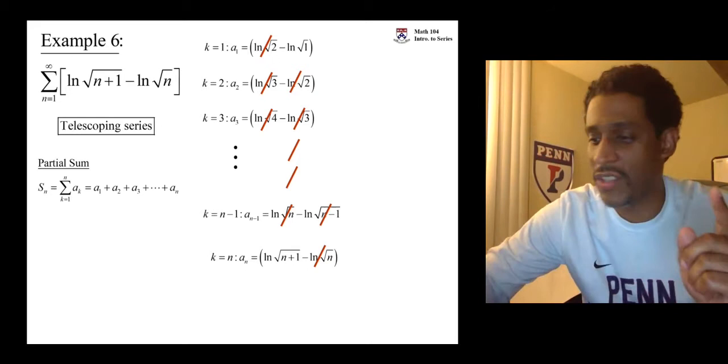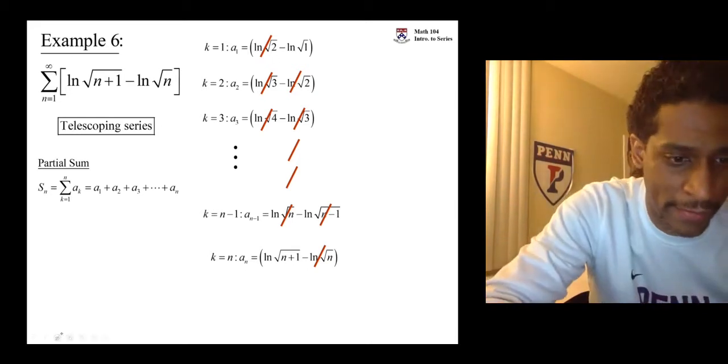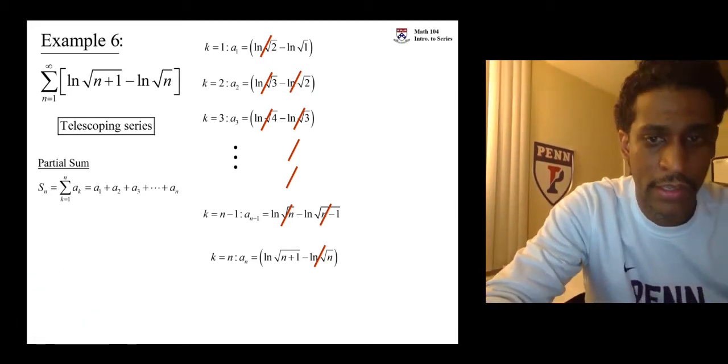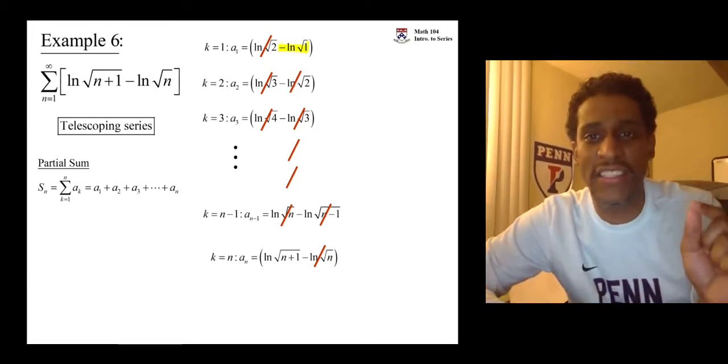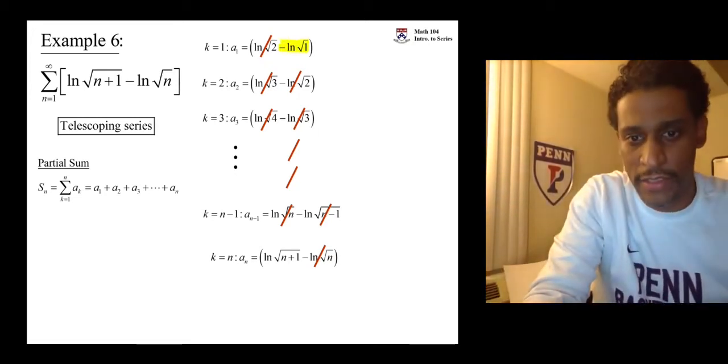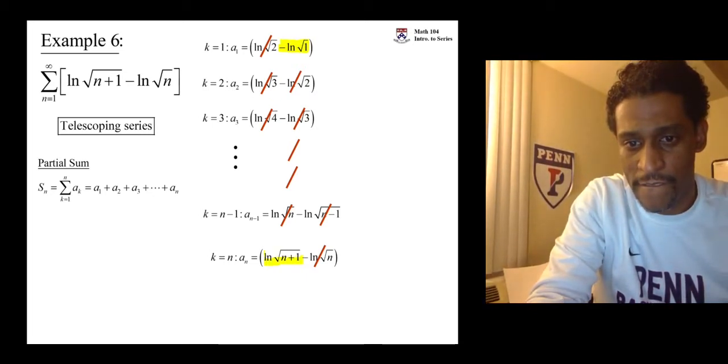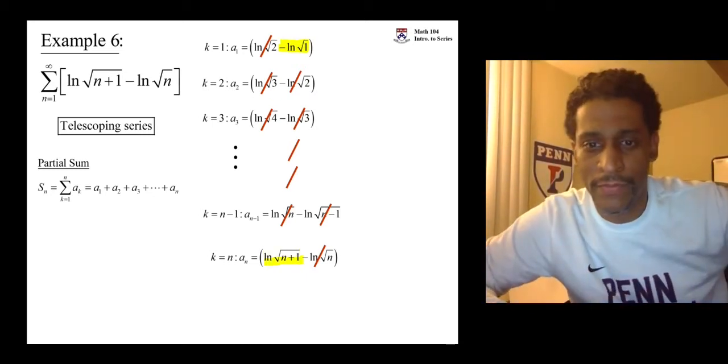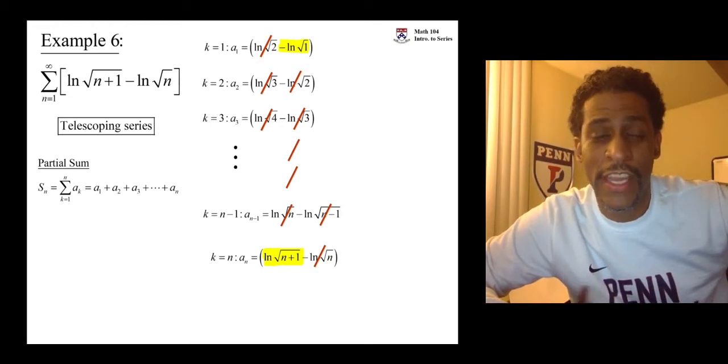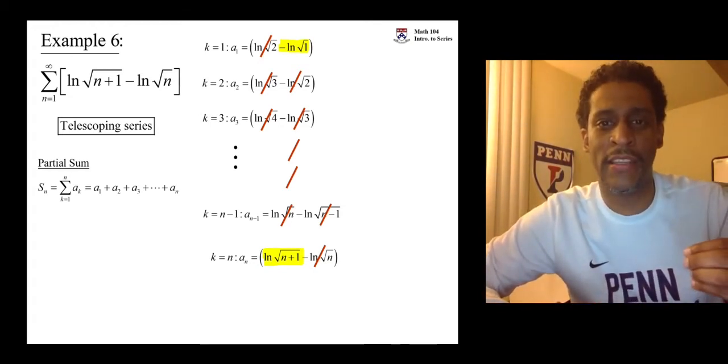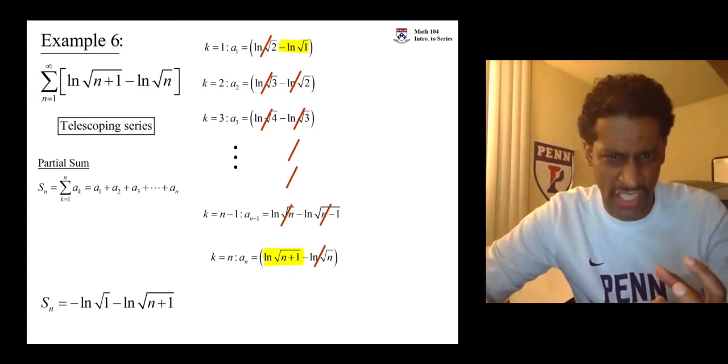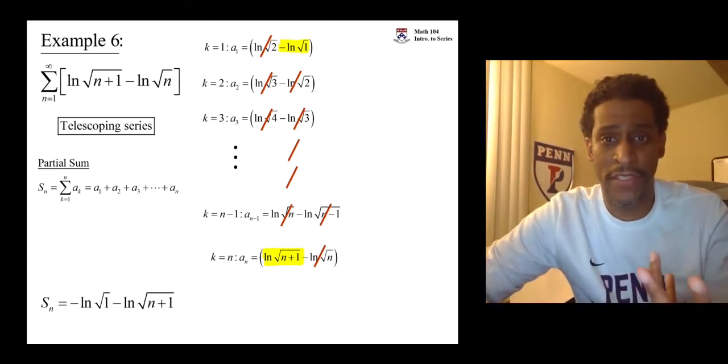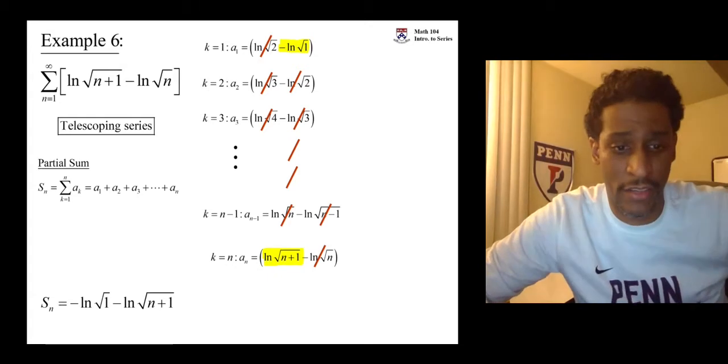You have one surviving term in the beginning. Let me highlight it. Therefore, you should only have one surviving term in the end. Let me highlight it. And so s sub n, the nth partial sum collapses, the middle of it does, and you just have the representation from the first term and the last term.